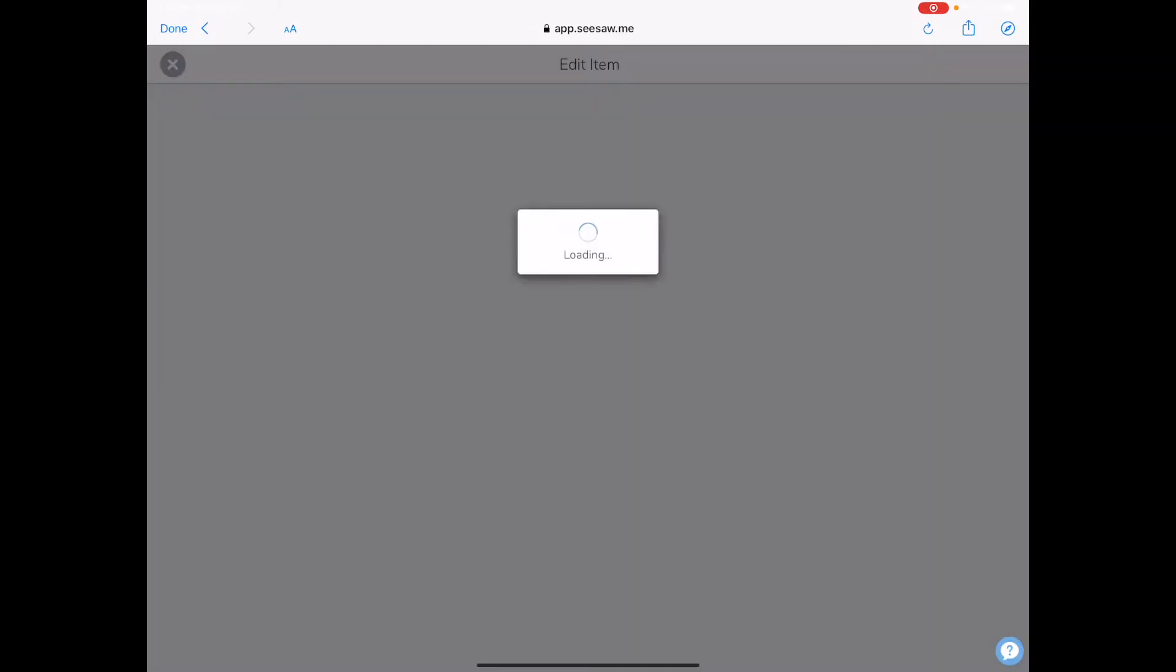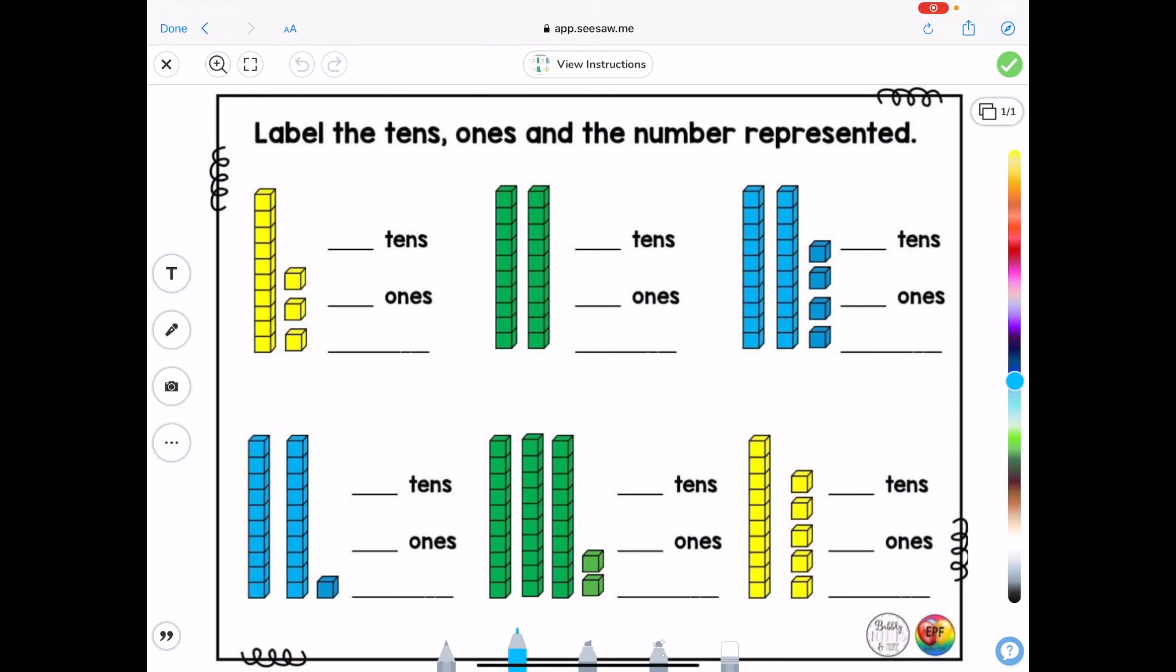And I am going to add my response for this particular item in Seesaw. I have tools down at the bottom. I have a pen tool that will allow me to write on this, and I can customize the color of the pen that I'm going to use.